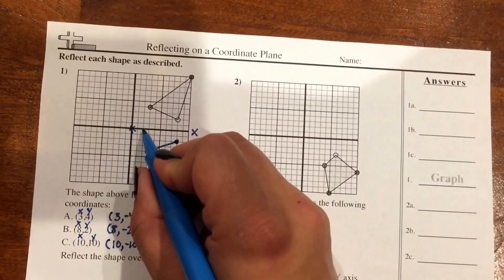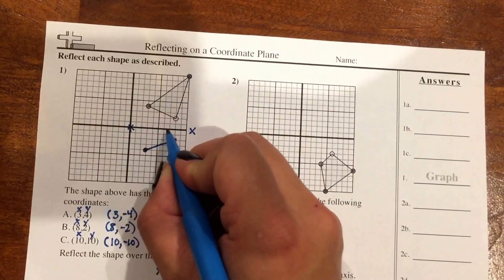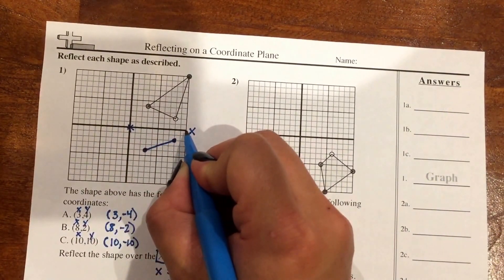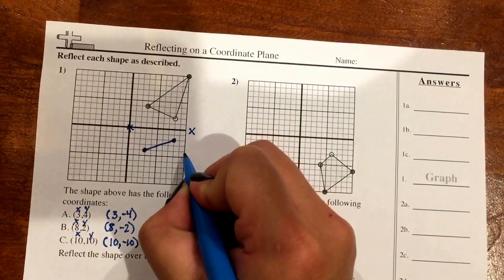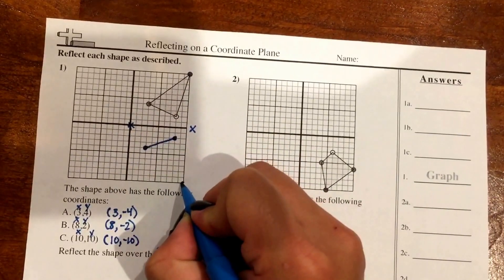So when I graph that, 1, 2, 3, 4, 5, 6, 7, 8, 9, 10, and then down 10. 3, 4, 5, 6, 7, 8, 9, 10.